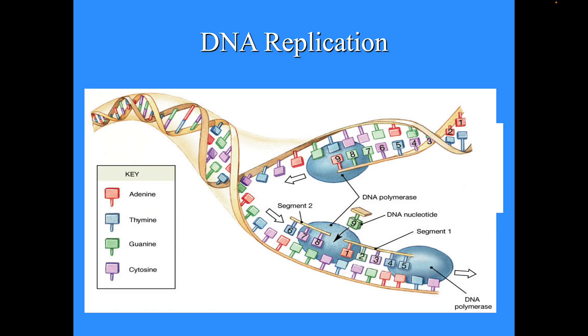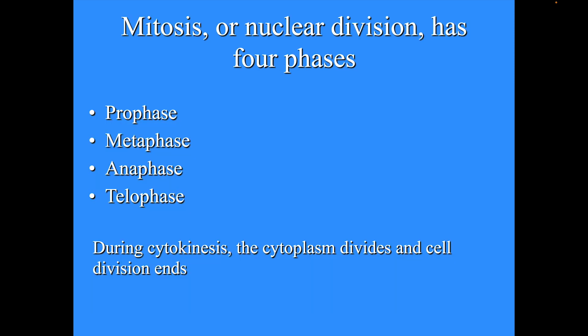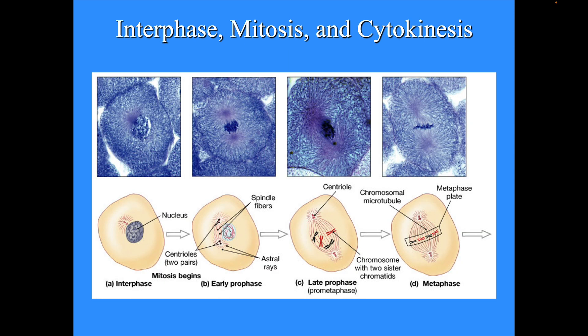DNA replication, which remember happens in S phase, will be covered in more detail, but you will have the double helix being replicated during the S phase. For mitosis or nuclear division, it has four phases: prophase, metaphase, anaphase, and telophase. During cytokinesis, the cytoplasm divides and cell division ends.